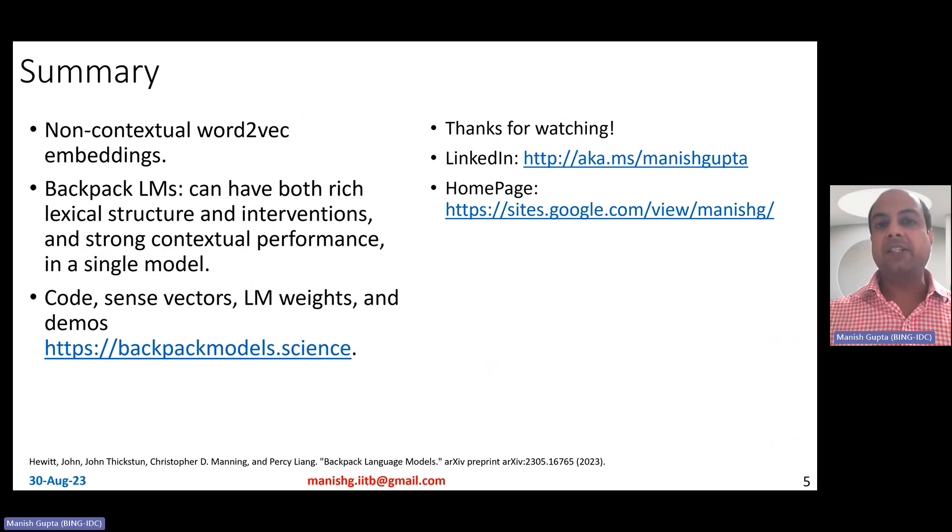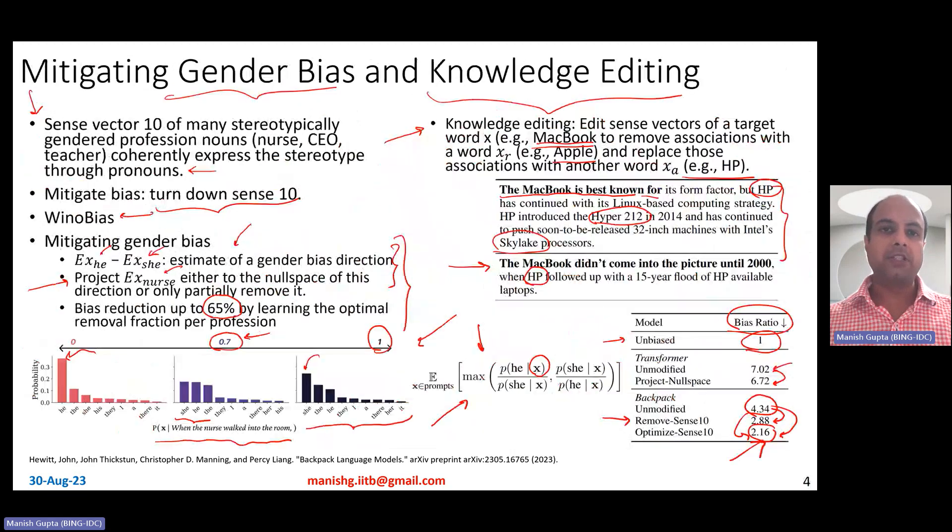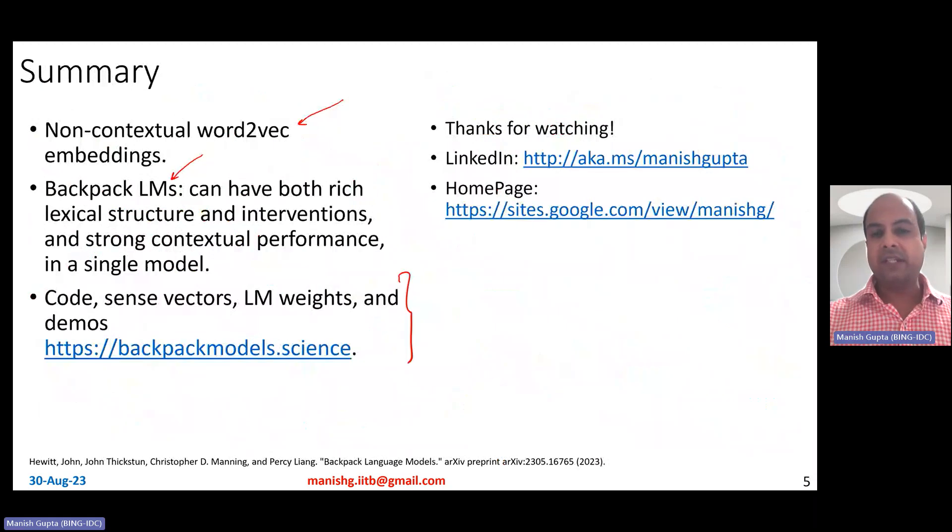Okay, so in this video, in summary, I talked about backpack elements. So when Word2Vec was introduced, it was non-contextual in nature. You have just one vector per word. Can I learn one vector per sense of the word? And that is where backpack elements play a role. They can have both rich lexical structure and interventions, while actually having strong contextual performance, both in a single model. It can support knowledge editing. It can support mitigation of bias. It can also help you essentially do topic control generation. So the code, sense vectors, language model weights, everything is publicly available. And that's it for this video. Thank you for watching. Hope you liked the video. Connect with me on my LinkedIn, or look at my research on my homepage. Thanks a lot.